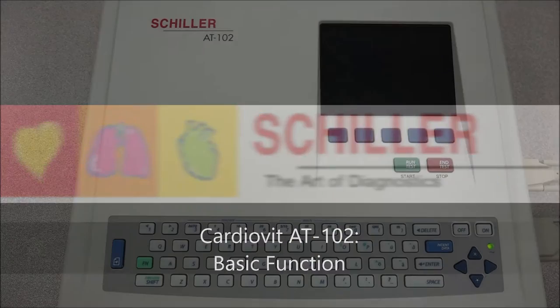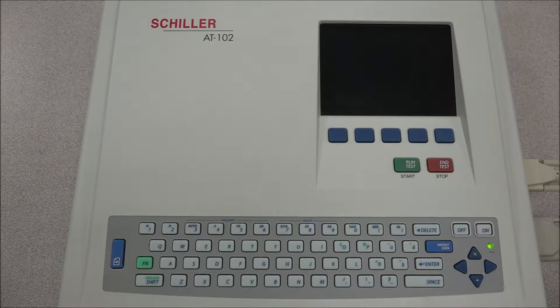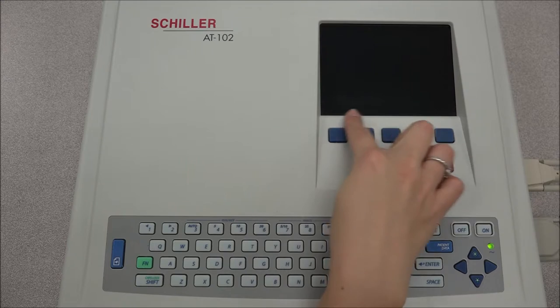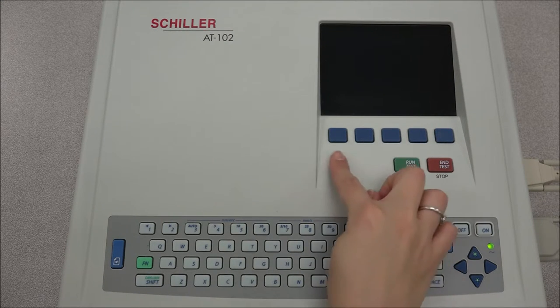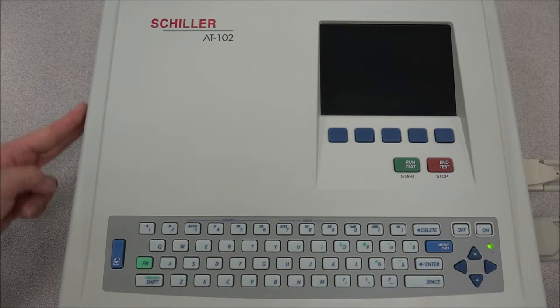In this video we will see the basic function of the AT102. The AT102 from Schiller is a 12-channel ECG that has an LCD screen that allows the visualization of the 12 leads, a complete alphanumeric keyboard with direct function keys, and a thermal printer.